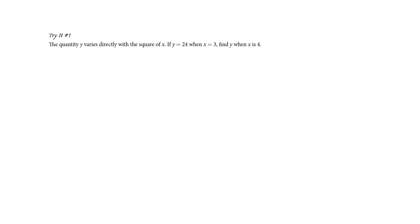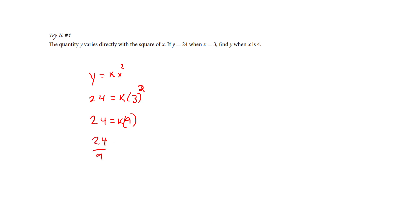Now I'm going to work another example. I know that y is varying directly with x squared. Well, y is 24 — I don't know the constant of variation — and x is 3, so I square it this time. I've got 24 equals k times 9. We don't usually write it in this order, but 24 over 9 is our k.